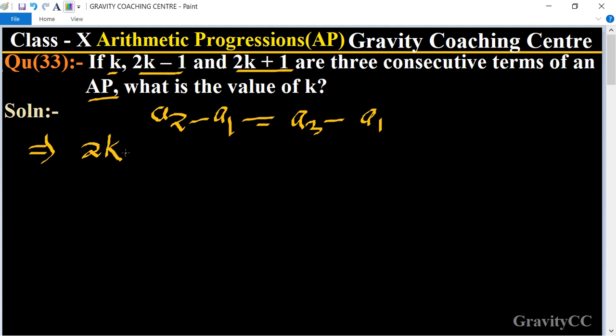minus 1, minus first term k, equals third term 2k plus 1, minus a2, which is second term 2k minus 1.